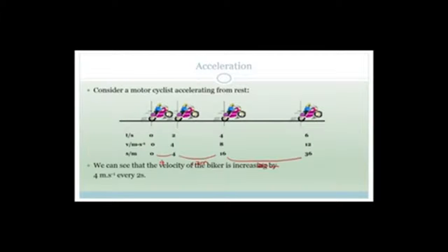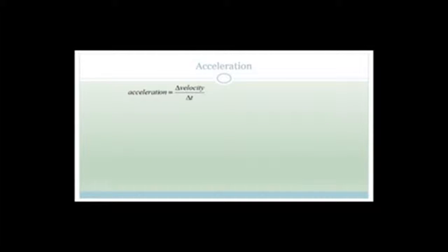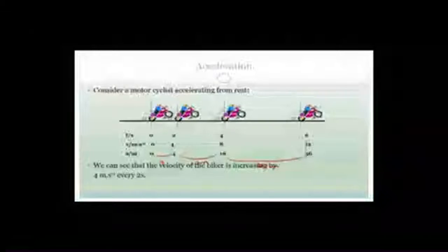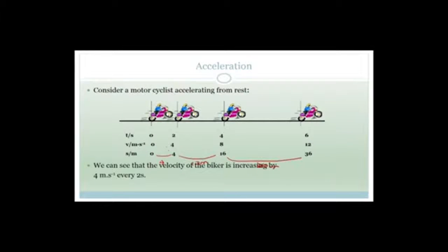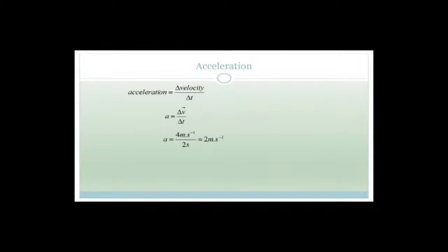The biker's velocity is increasing by 4 meters per second every two seconds. The definition of acceleration is changing velocity over changing time. The velocity goes up by 4 meters per second every 2 seconds, so the acceleration is 4 divided by 2 — that's 2 meters per second squared.